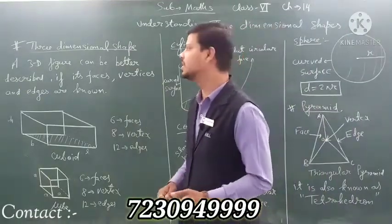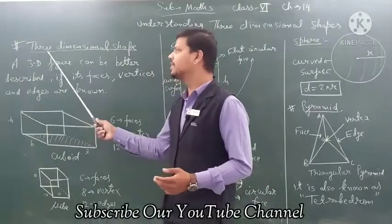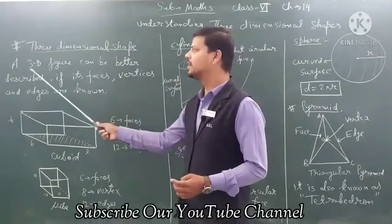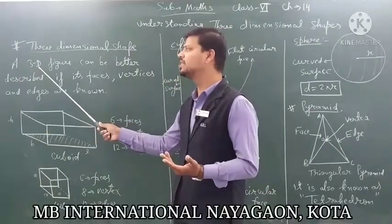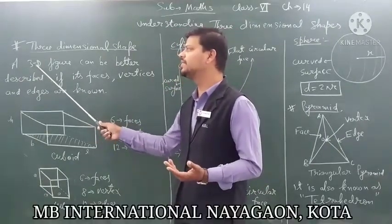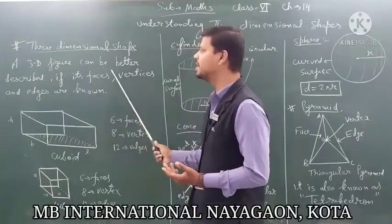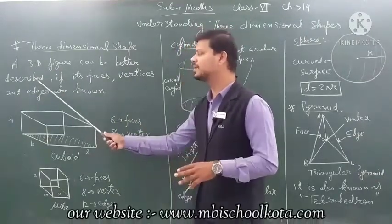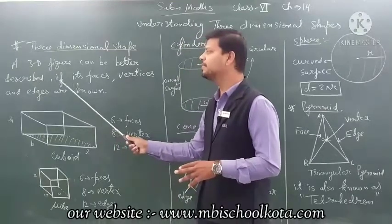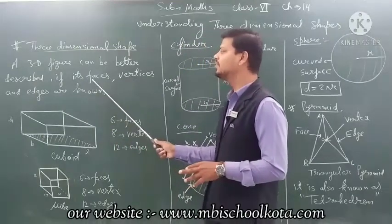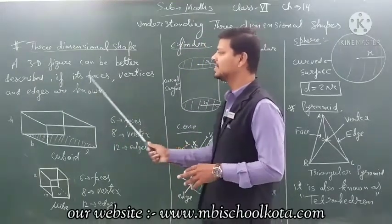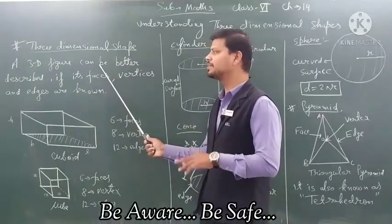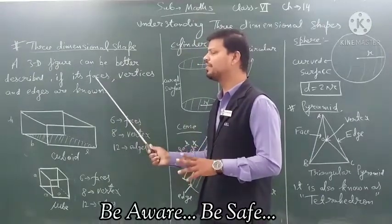First of all, the definition of 3-dimensional shapes: 3-dimensional shapes are also known as 3D shapes or 3D figures. 3D figures can be better described if their faces, vertices, and edges are known.